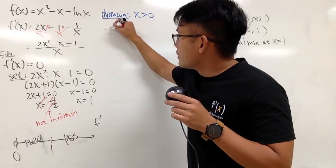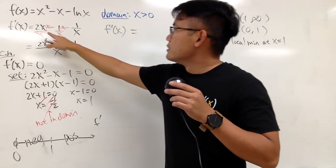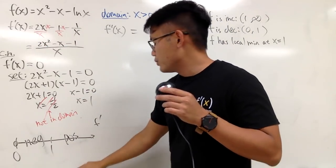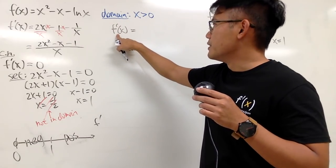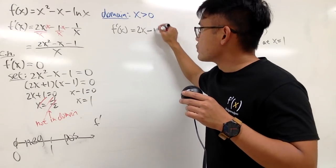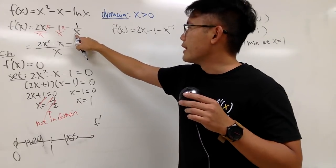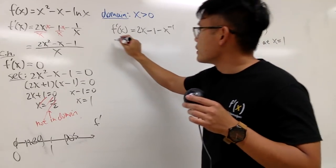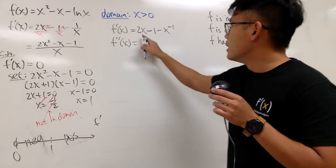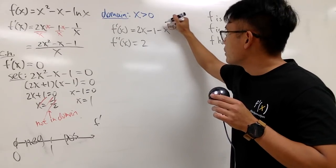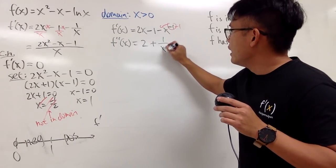Now let's talk about concavity, so we need the second derivative. Writing f'(x) = 2x minus 1 minus x to the negative 1 power makes it easier to differentiate. Taking the derivative: the second derivative f''(x) equals 2 plus 1 over x squared, since the power rule on x to the negative 1 brings down negative 1, and negative times negative is positive.